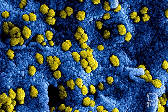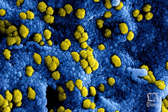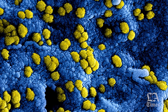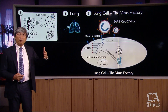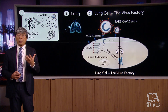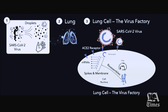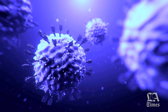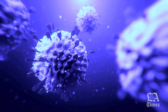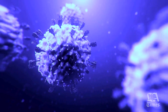The virus goes on to take advantage of the cell itself and use the cell as a factory. It takes the RNA inside the virus, breaks it up, and remarkably uses what we call the Golgi apparatus — the machinery of the human cell — to reproduce itself and repackage. In so doing, it propagates. This is how the virus actually regenerates and sheds.